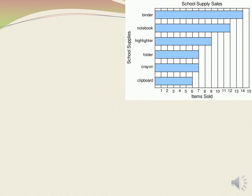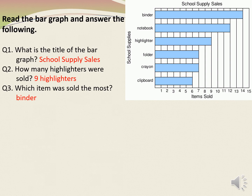Let's see another question. This is a horizontal bar graph — here the bars are in horizontal position. The title for this bar graph is school supply sales. The x-axis shows the number of items sold and the y-axis shows names of the school supplies: clipboard, crayon, folder, highlighter, notebook and binder. First: what is the title of the bar graph? The title is school supply sales. Next, to find out the number of highlighters sold, we look at the bar which represents highlighters. Therefore, our answer is 9 highlighters.